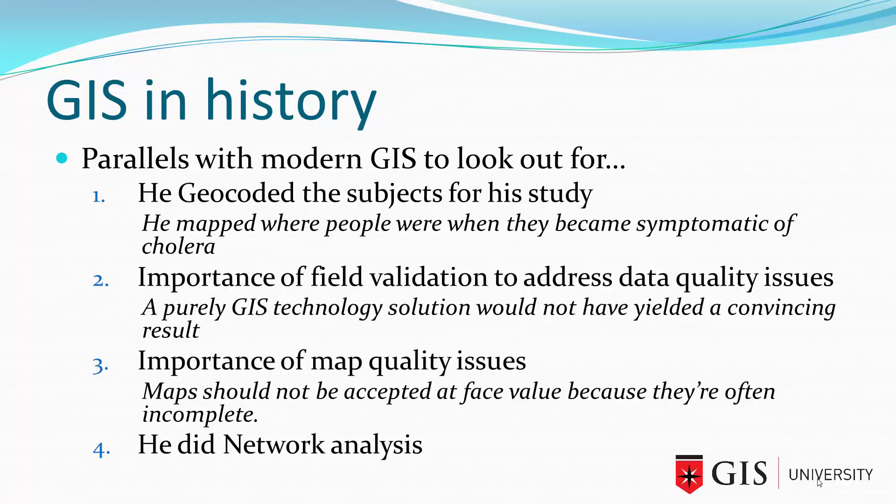There are a number of parallels with modern GIS that I want you to look out for as we go through this. The first is that he geocoded the subjects for his study. In other words, he mapped where people were when they became symptomatic of cholera. This idea of taking a list of people's addresses and putting them on a map is what's called geocoding, and we do that all the time in GIS.